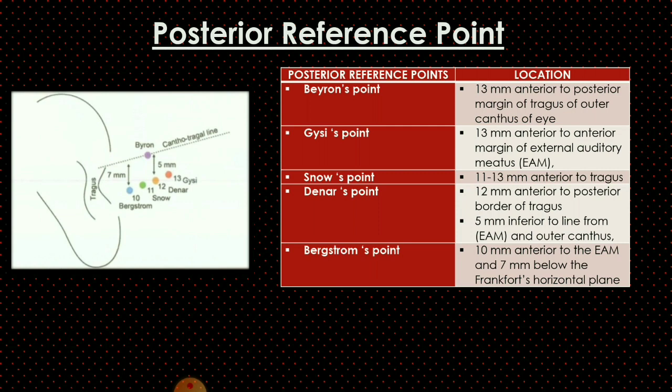A useful way to remember the distances from the external auditory meatus or tragus: Bergström is 10 mm, Snow's point is 11 mm, Denar is 12 mm, and Gysi's is 13 mm. So remembering 10, 11, 12, 13 corresponds to Bergström, Snow, Denar, and Gysi respectively.